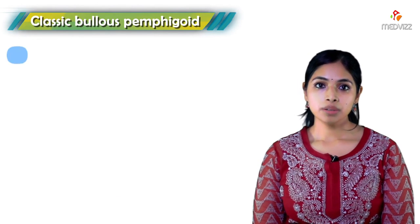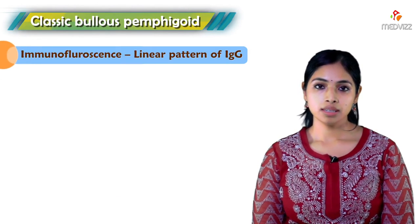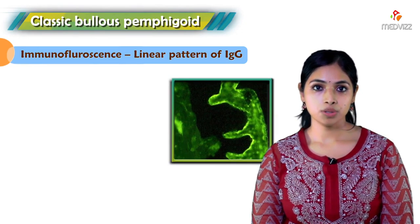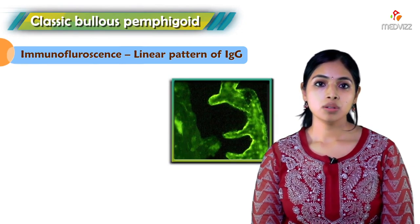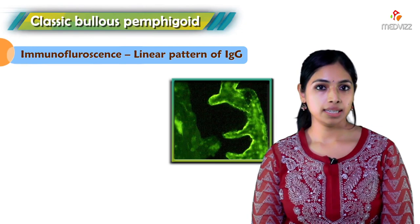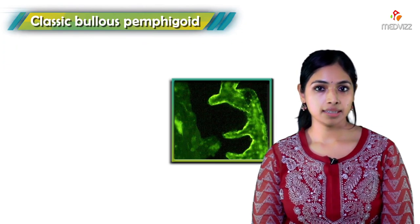On immunofluorescence, there is a linear pattern of IgG present along the basement membrane zone. Very rarely, we can also see IgM and C3 reactants.